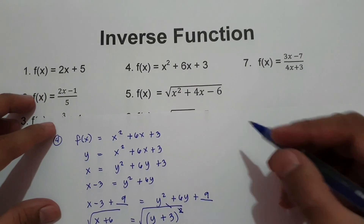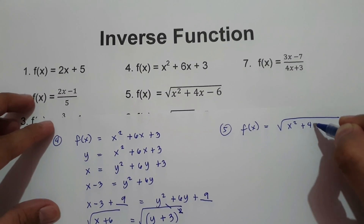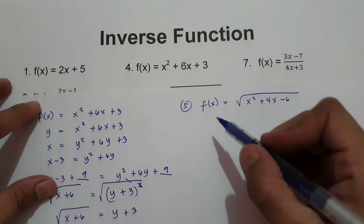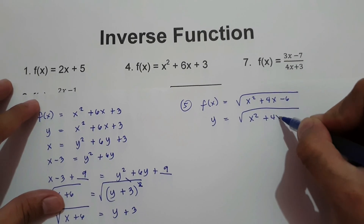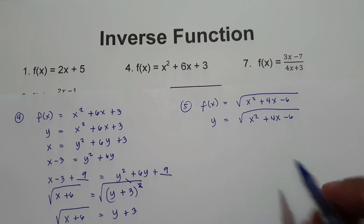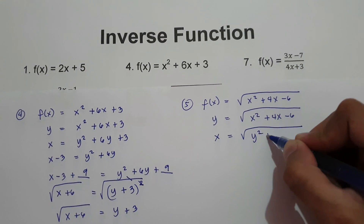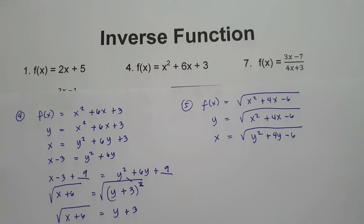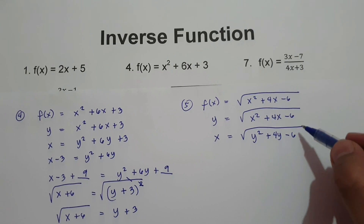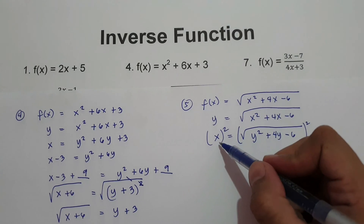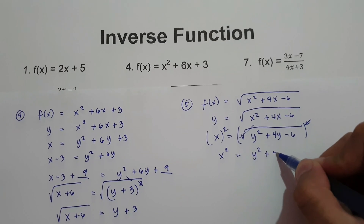What about number 5? f of x equals square root of x squared plus 4x minus 6. We need to change f of x into y: y equals square root of x squared plus 4x minus 6. Then switch x and y to find the inverse: x equals square root of y squared plus 4y minus 6. To express this equation in terms of y, we eliminate the radical sign by squaring both sides. x squared equals y squared plus 4y minus 6.